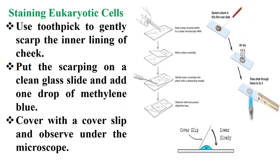We are now learning the light microscope handling, and we need to learn how to stain eukaryotic cells. For staining eukaryotic cells, we must use a toothpick to gently scrape the inner lining of the cheek, then put the scraping on a clean glass slide, add one drop of methylene blue, cover with a cover slip, and observe under the microscope.